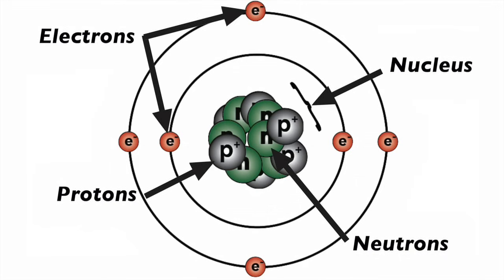Orbiting outside of the nucleus, way in the distance, are negatively charged particles called electrons, which have very little mass.